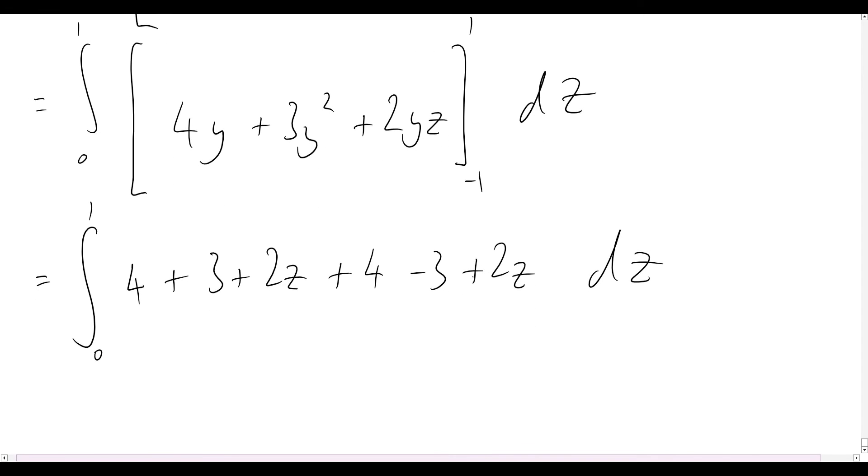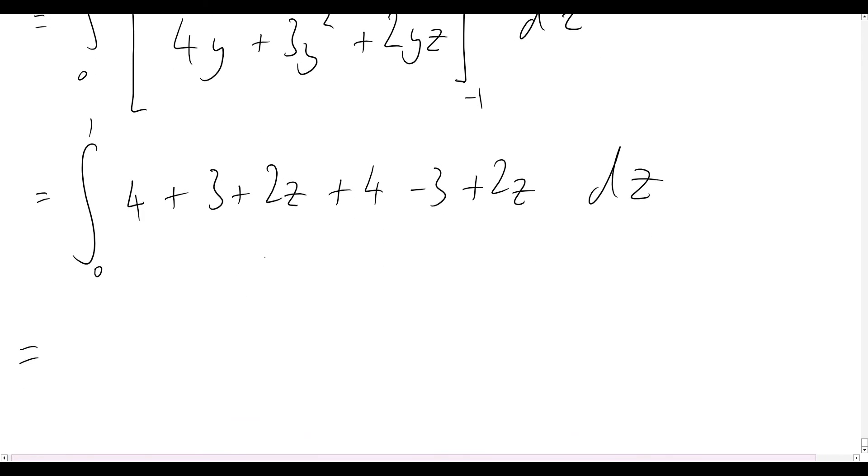And so now we're up to our last step here. Just to quickly go through, integrate this with respect to z, and that's all there is. So first things first though, we can probably collect some like terms. We notice that plus 3 will cancel out with that minus 3 over there. And we're left with 4 plus 4 plus 2z plus 2z. So we'll have the integral from 0 to 1 of simply 8 plus 4z with respect to z.